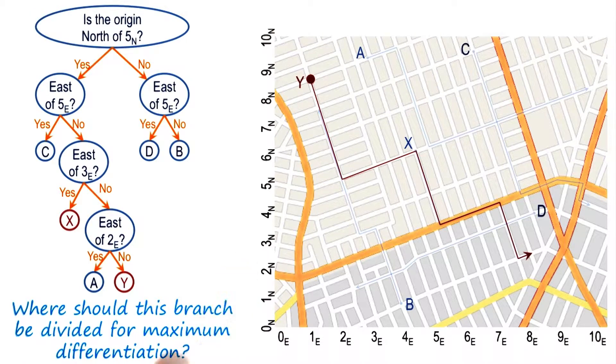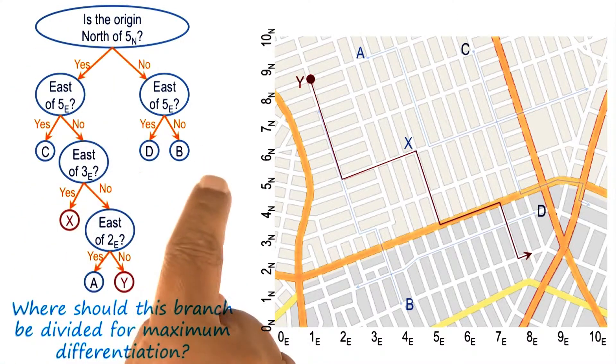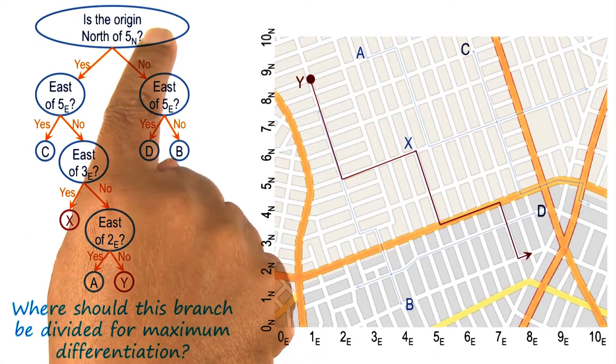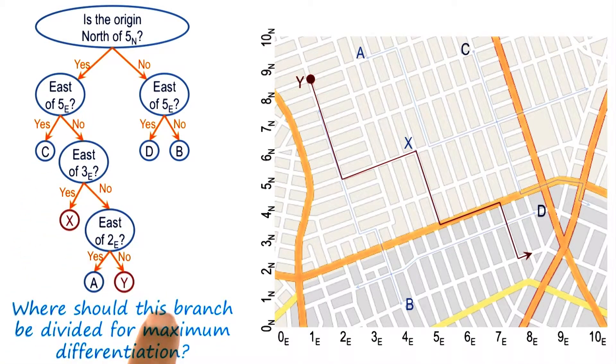In both organizational schemes, the table and the discrimination tree, we are trying to accommodate and accumulate new cases. But in the case of the discrimination tree, by asking the right questions at the right nodes, we make the search process more efficient.